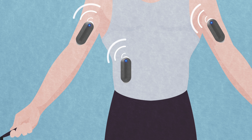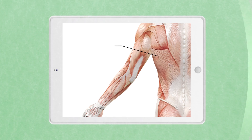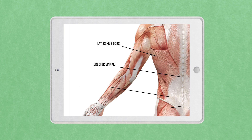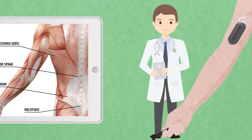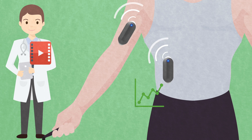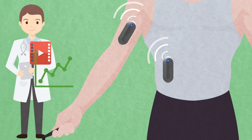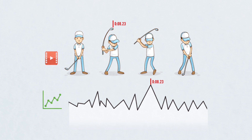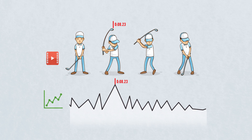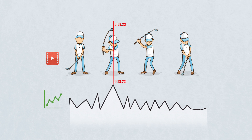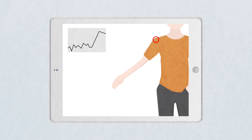Just apply the sensors to the muscles, select which muscles you would like to track, then record the video. The app synchronizes and combines video and sensor data to give you a detailed overlay of how muscles are activated.